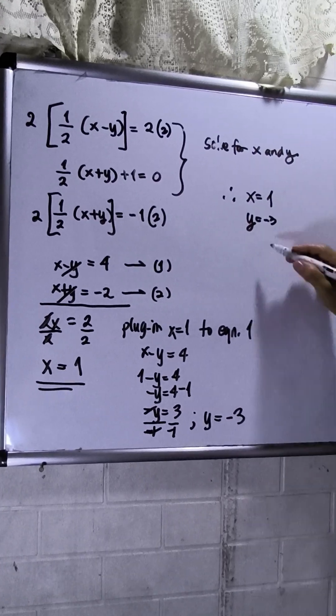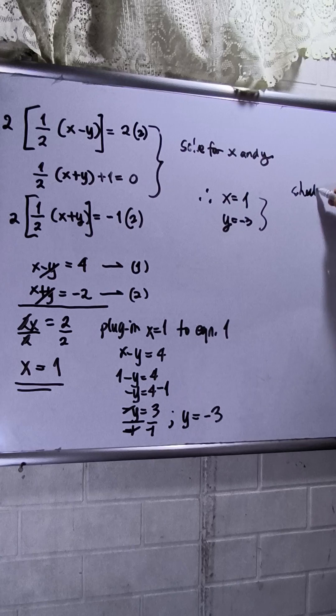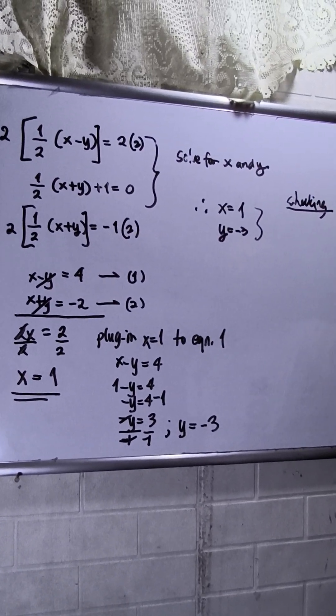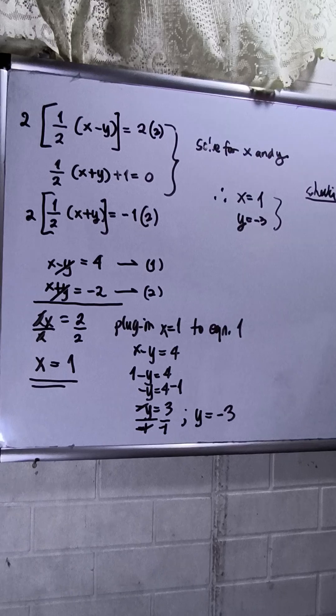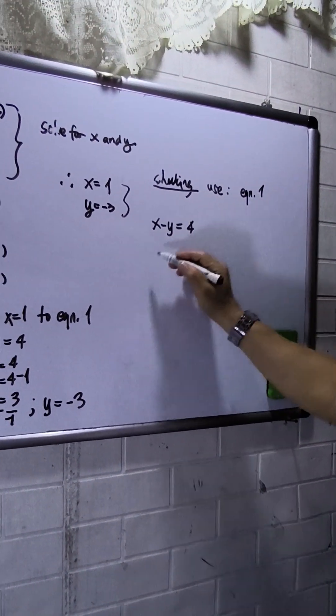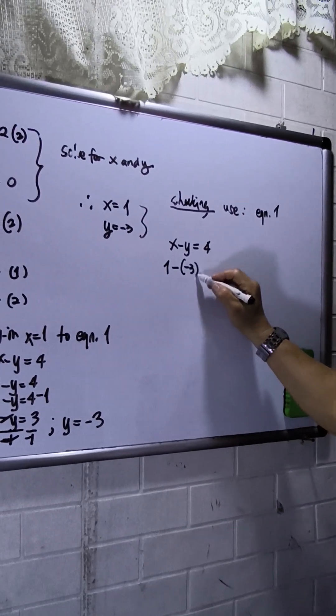Now let us check this one. Check using equation 1. So equation 1 x minus y is equals to 4. So x is 1. Then y is negative 3.